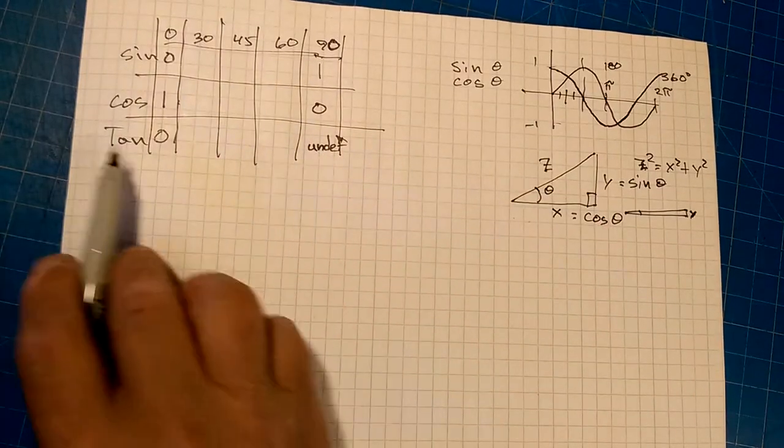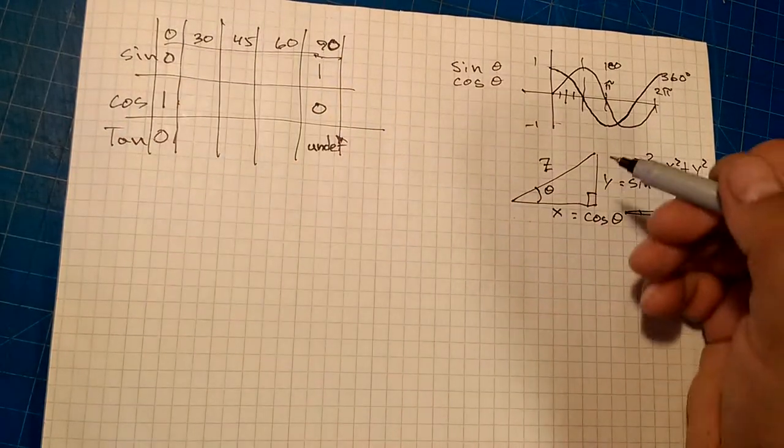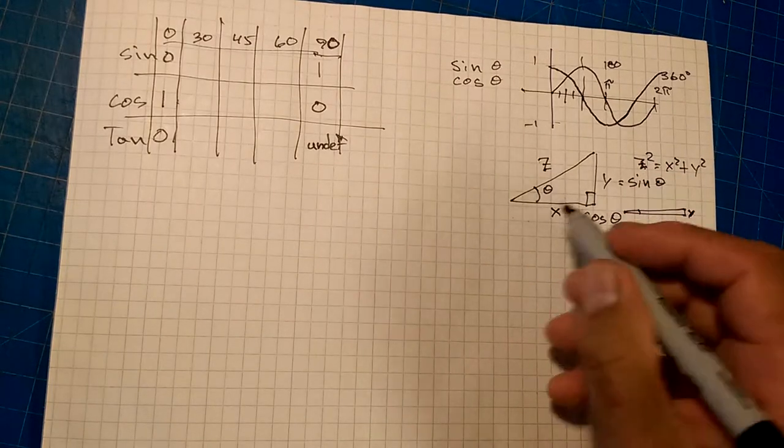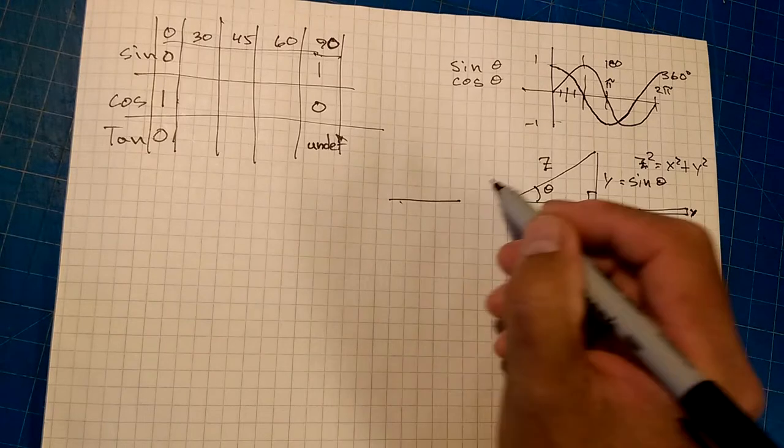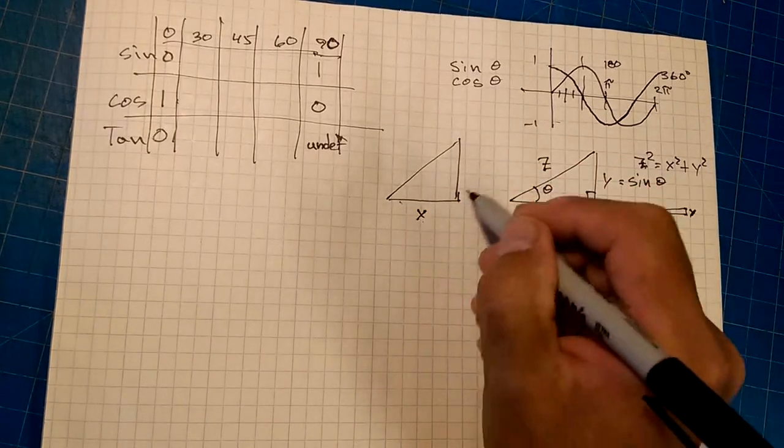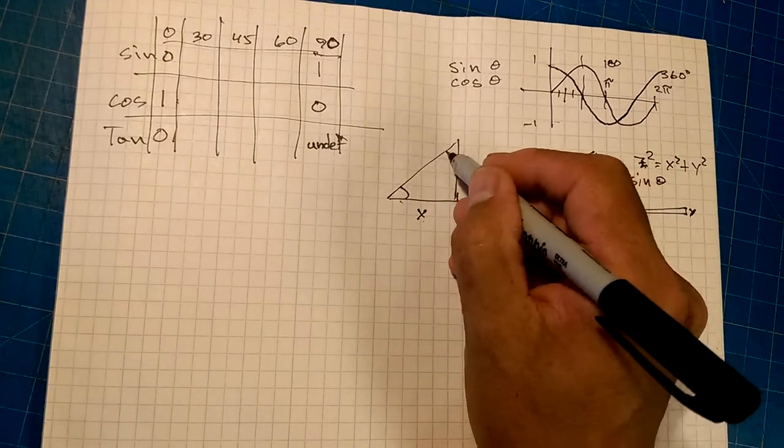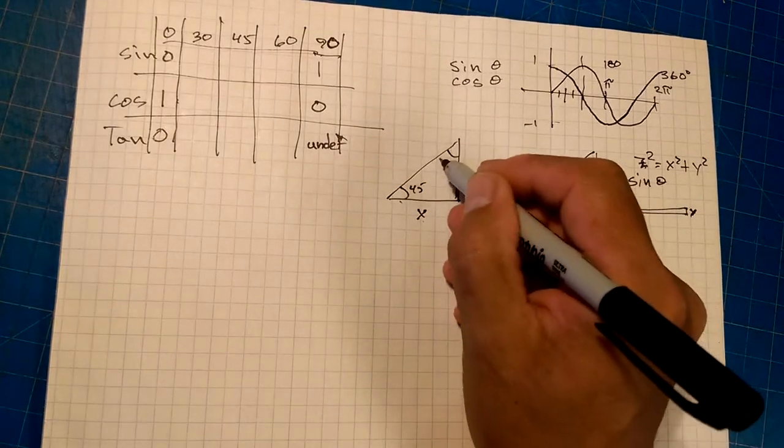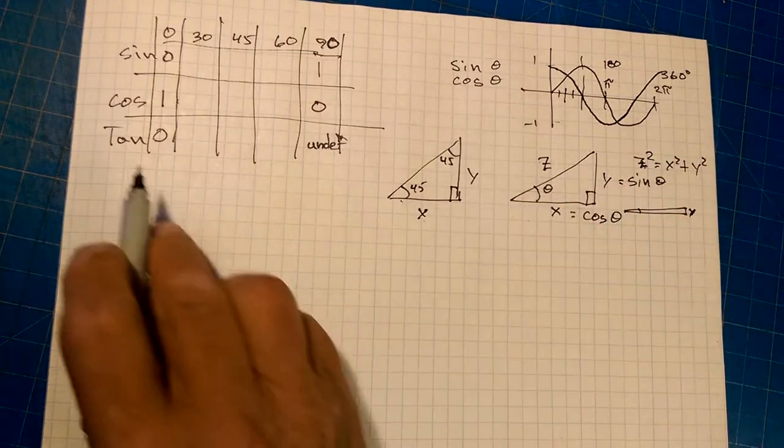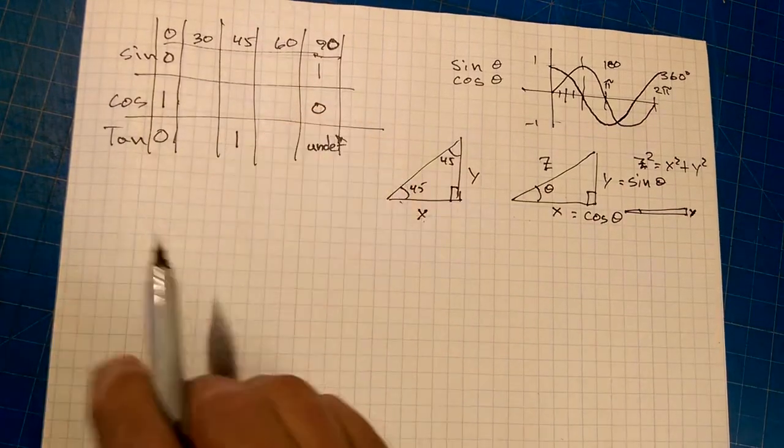And that lets us figure out the rest of these. Now, if we have 45 degree angles, x is equal to y, because this is 45, and this is 45, and this is 90, tangent of 45 is going to be equal to 1...